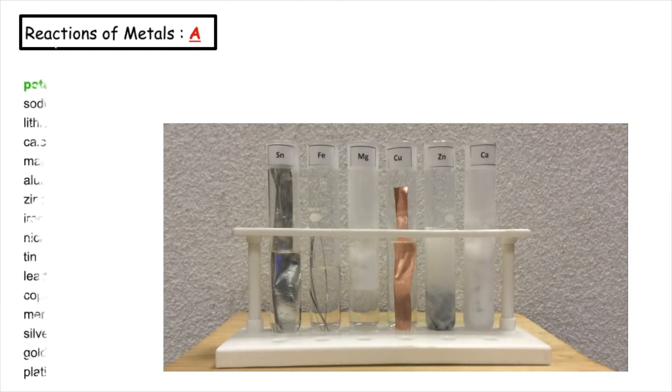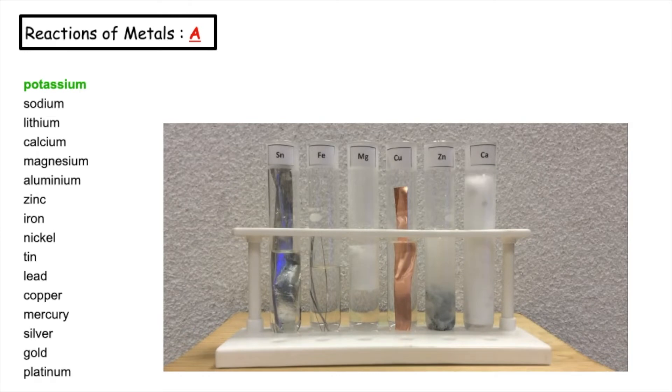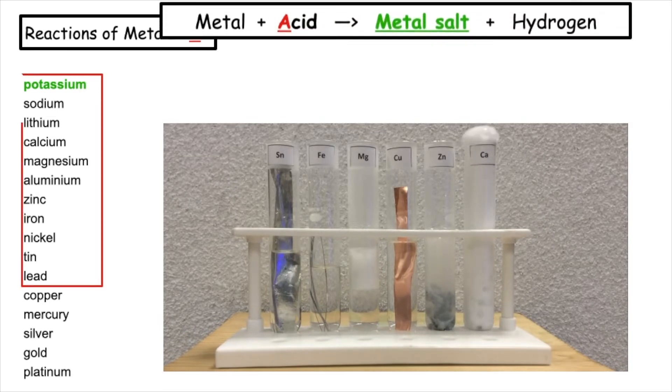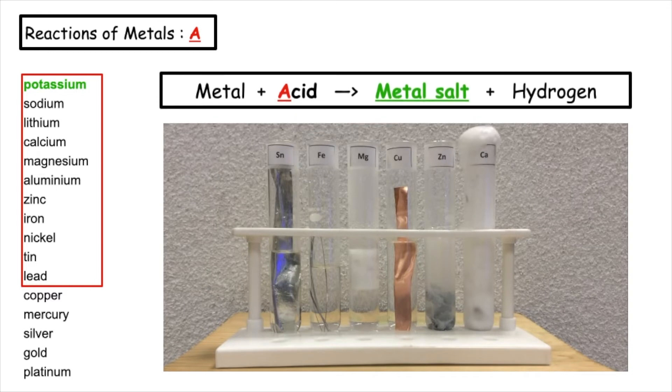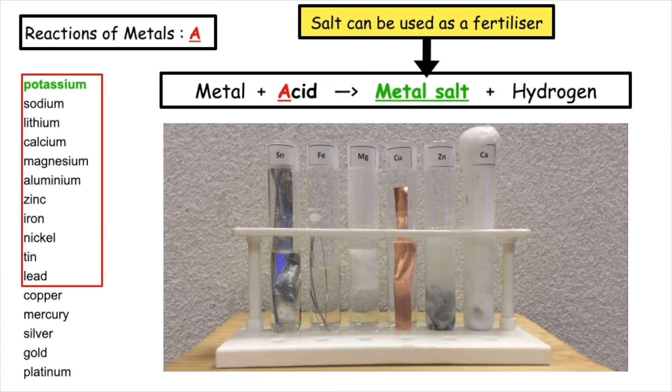The reactivity series is a list of metals which start from the most reactive to the least reactive. Lead and above react with acids. Now because we produced a metal salt, this can be used as a fertiliser. Remember fertilisers have to contain the elements N, P or K.